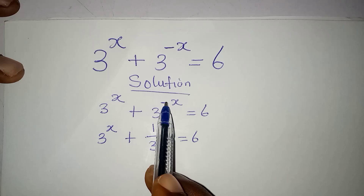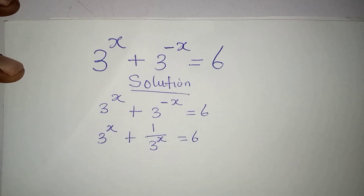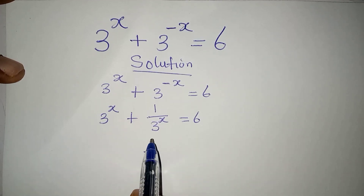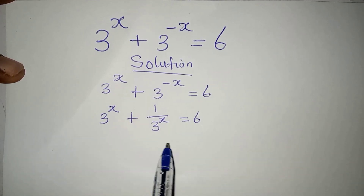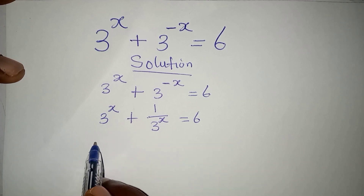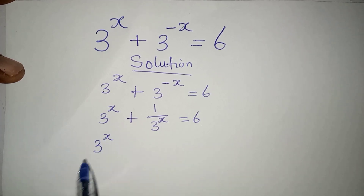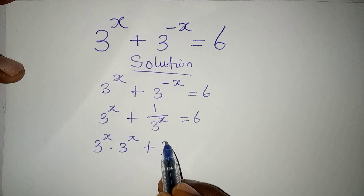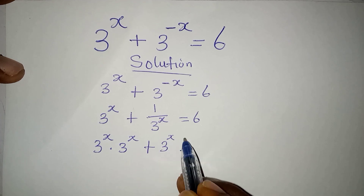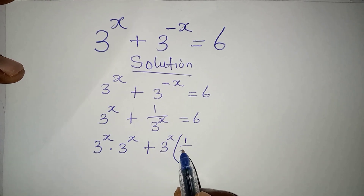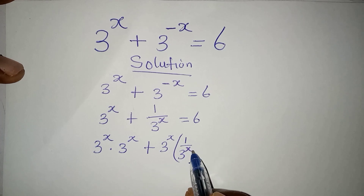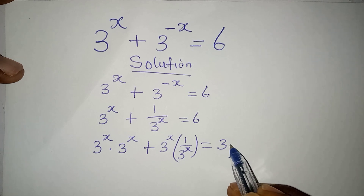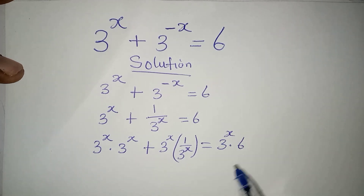To eliminate this negative, I'm going to have 1 over everything. From here, we can multiply everything by the LCM, which is 3 to the power of x. So we have 3 to the power of x multiplied by 3 to the power of x, plus 3 to the power of x multiplied by 1 over 3 to the power of x, and it's equal to 3 to the power of x multiplied by 6.